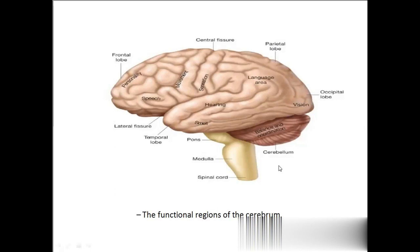Cerebellum is for balance and coordination. The brainstem consists of pons, medulla oblongata, and connects to the spinal cord. Medulla oblongata continues as the spinal cord. To summarize: frontal lobe — personality, speech, movement; parietal lobe — sensation, language; occipital lobe — vision; temporal lobe — hearing and smell; cerebellum — balance and coordination; brainstem — pons and medulla oblongata.